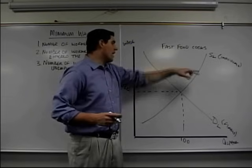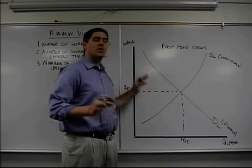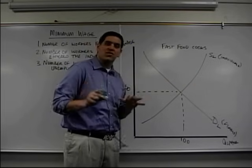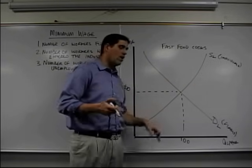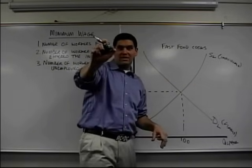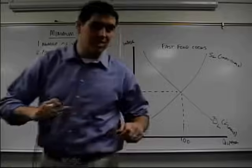Demand can shift right. Supply can decrease. There are these different shifters to determine what happens to the wage and quantity. That's it — done. See you next time.